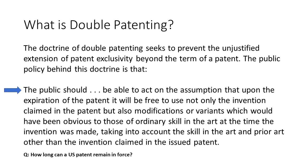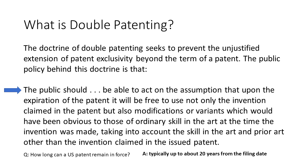The U.S. Patent Office has a longer explanation — you can pause the video to read it — but the shorter answer is that patents are supposed to be enforced for a time period that typically maxes out at 20 years from the filing date. The point of double patenting is to close loopholes that could allow an invention to be under patent for longer than that maximum time period.